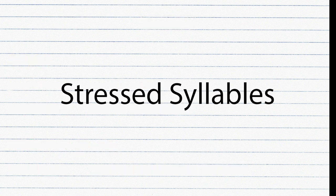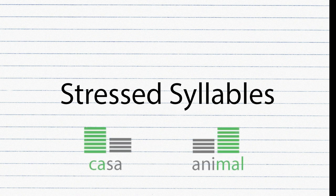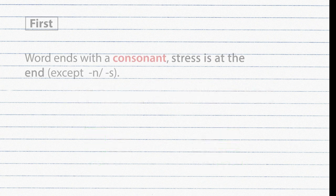Stress syllables. All Spanish words have at least one stressed syllable — meaning one syllable is louder than the rest. There are two easy rules to know which syllable is stressed. First rule: if the word ends with a consonant, the stress is on the last syllable, except for the letters N and S.